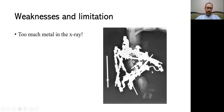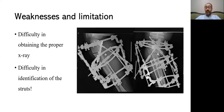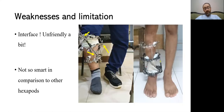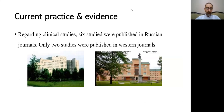Weaknesses and limitations: too much metal, especially in young legs — hard to read the X-ray, but it's a matter of experience. Some difficulty obtaining proper X-rays, though equivalent to TSF with trained technicians. Difficulty identifying struts — some marks help, but with time you can read them without the marks. The interface is not very user-friendly and needs improvement. The frame itself is not as neat as others. Regarding clinical evidence, we have about six clinical studies: six published in Russian journals and only two in Western journals.